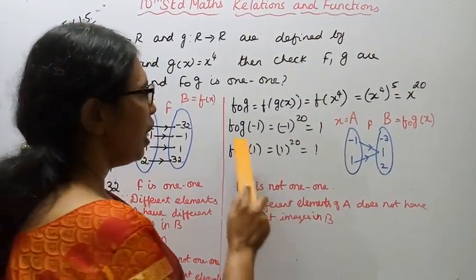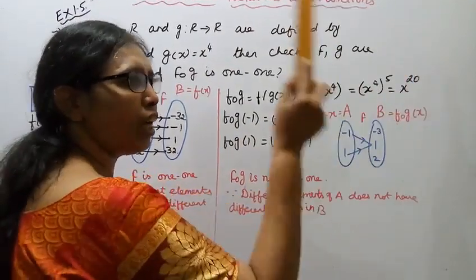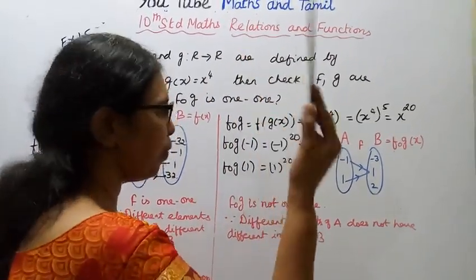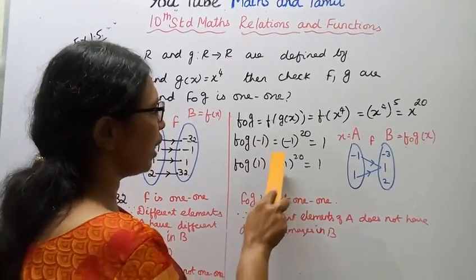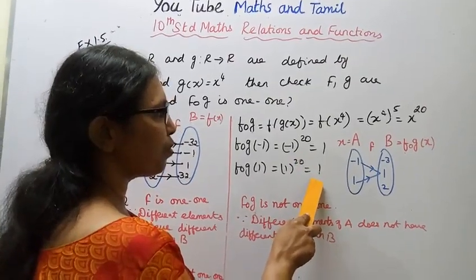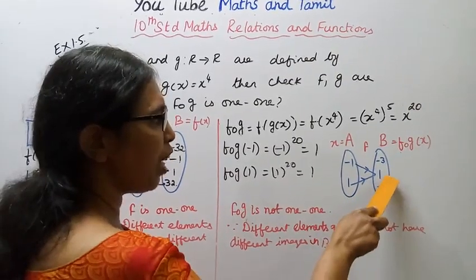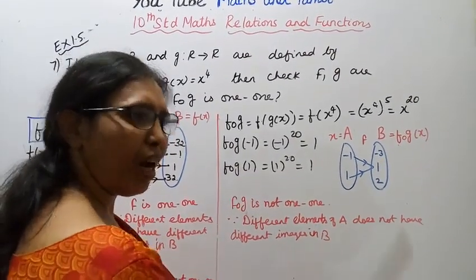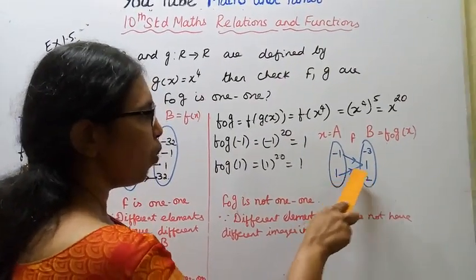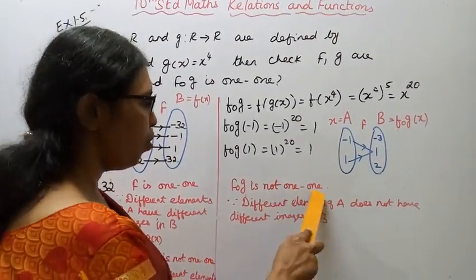Since f∘g gives x^20, let's take just two values: minus 1 and 1. (minus 1)^20 = 1 and 1^20 = 1. Different elements of A have the same image in B. Therefore f∘g is not 1-to-1. Minus 1 and 1 both map to the same image 1, so f∘g is not 1-to-1.